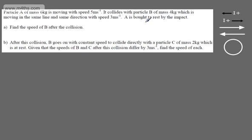A is brought to rest by the impact. In part A, we're asked to find the speed of B after the collision. In part B, after this collision, B goes on with constant speed to collide directly with a particle C of mass 2 kilograms, which is at rest. Given the speeds of B and C after this collision differ by 3 meters per second, we're asked to find the speed of each.